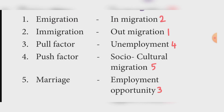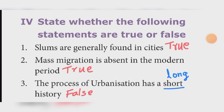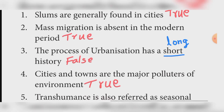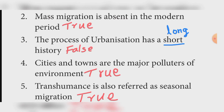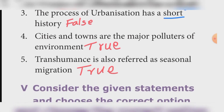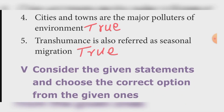State whether true or false. First: Slums are generally found in cities — True. Second: Mass migration is absent in the modern period — True. Third: The process of urbanization has a short history — False; it has a long history. Fourth: Cities and towns are the major polluters of environment — True. Fifth: Transhumance is also referred to as seasonal migration — True.